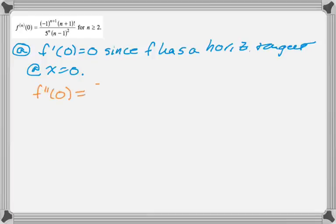We can use that weird thing to find f double prime of zero. So what we're doing is every n is being replaced with two in that formula. So we end up with, since it's negative one to the third, that thing is less than zero.